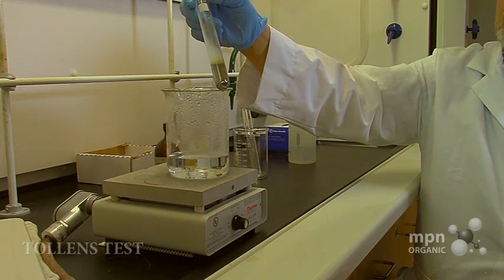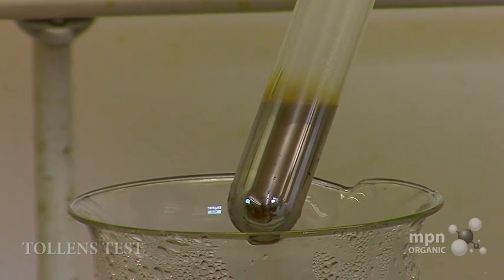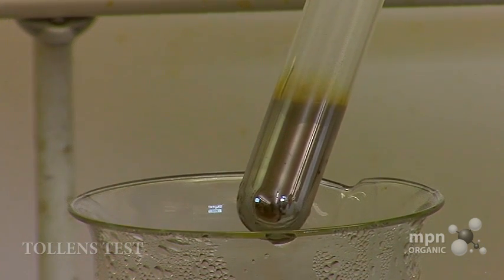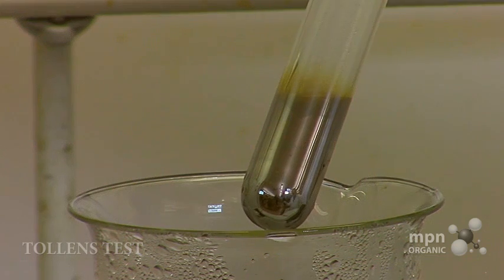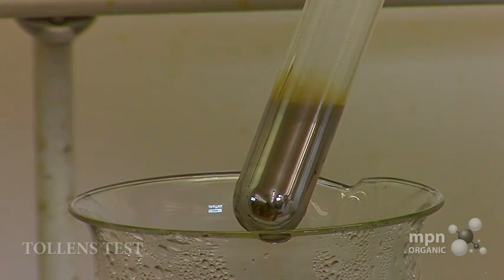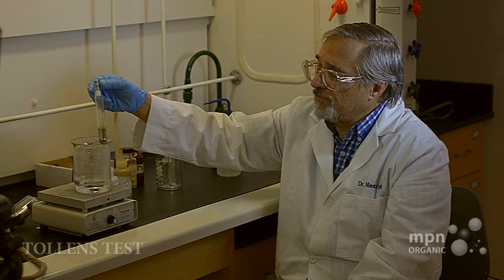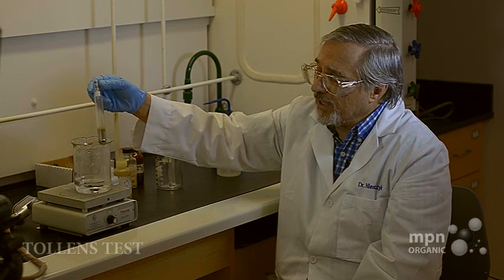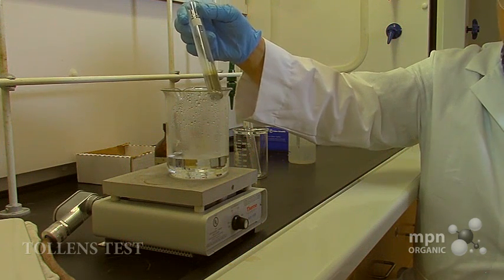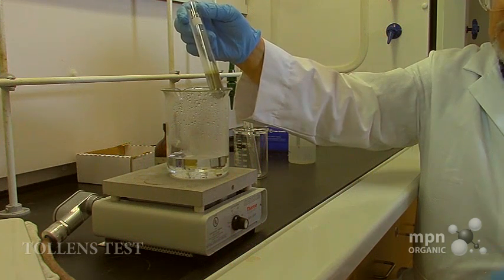This is called the silver mirror test. And it's due to the fact that you have a very easily reducible silver ion in that complex form with ammonia, and you have a very easily oxidizable functional group, namely the aldehyde, supplied by the glucose. So, easily reducible, easily oxidizable.